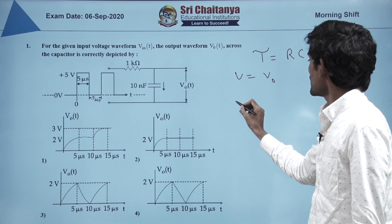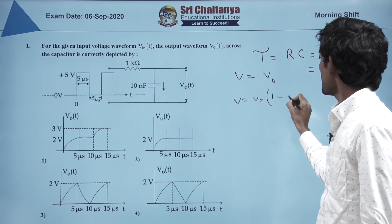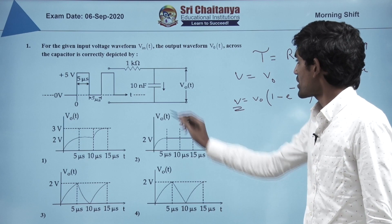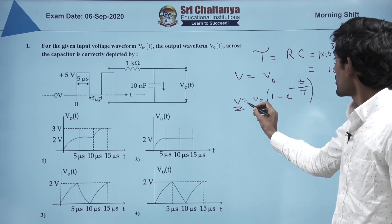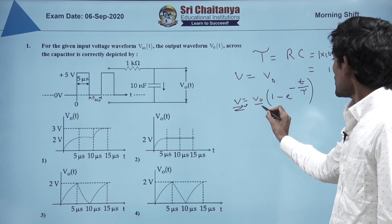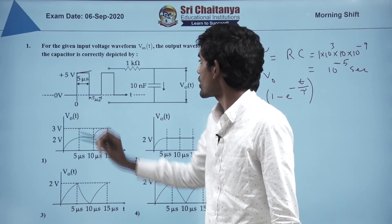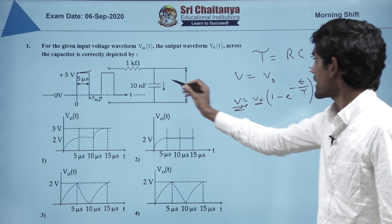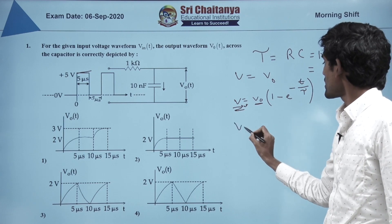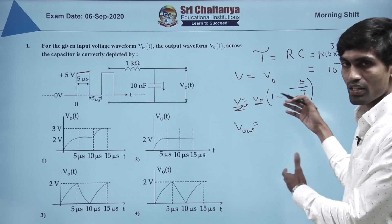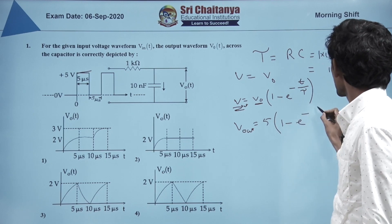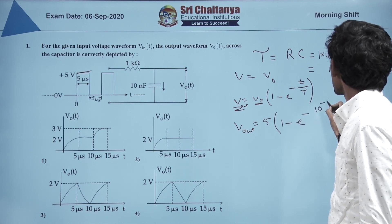We know that V₀ into (1 minus e^(−T/τ)) is the voltage across the capacitor. Using this, this is the input and this is the output across the capacitor. If input is 5 volts as given in the question, the output after 5 microseconds can be calculated as V_out after 5 microseconds; the capacitor will be charged.